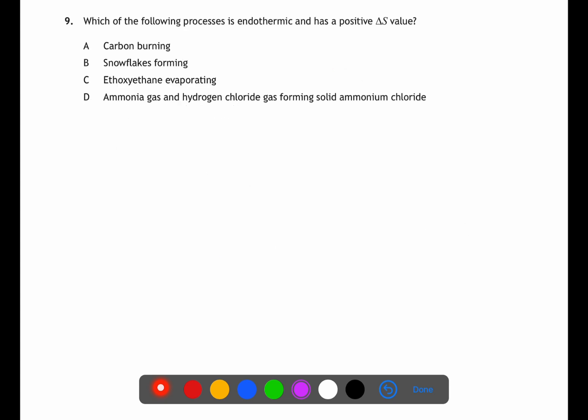In question 9 we're looking for a process which is endothermic and has a positive delta S value. An endothermic reaction will take in heat and a positive delta S value will have an increase in disorder. When you evaporate ethoxyethane this will take in heat and this will increase in disorder.